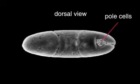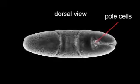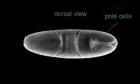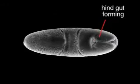A similar sequence viewed from the top, or dorsal side. Pole cells migrate and then move into the interior as the hind gut invaginates.